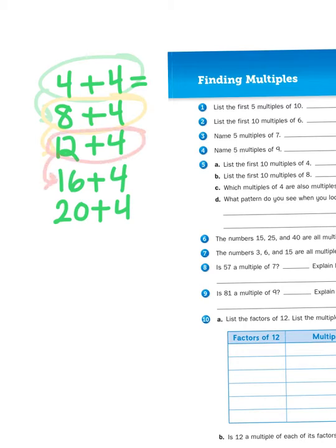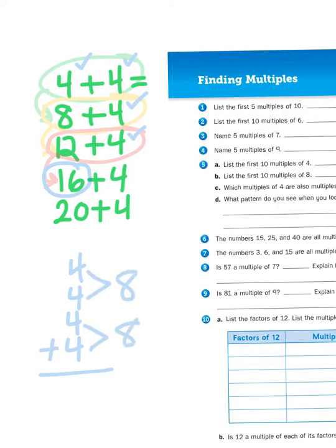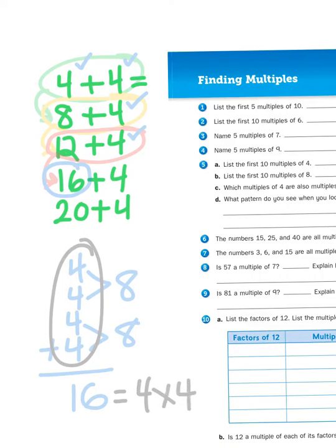So, when I'm skip counting by 4s, I'm just adding a 4 to the previous number. That's also multiplication, friends, because if I think about 16, right here, 16 is the product of 1, 2, 3, 4 4s. So, if I were to add 4 plus 4 plus 4 plus 4 together, 4 plus 4 is 8, 8 plus 8 is 16, that is 4 groups of 4, or 16 equals 4 times 4.